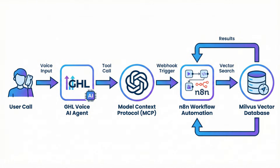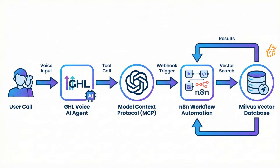Here's what we're building today. A user calls our AI voice agent in GoHighLevel. It transcribes their speech, extracts what they want, and calls an MCP server — that's Model Context Protocol — which triggers an n8n workflow. The workflow formats the query, searches Milvus using hybrid search to get ranked results, and summarizes it in a text-to-speech-friendly way for the voice agent to present results back to the user.